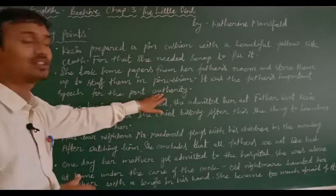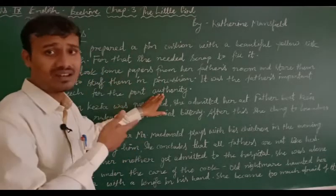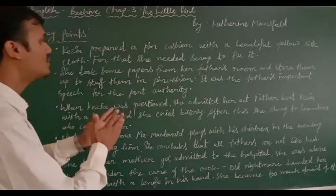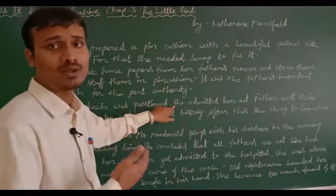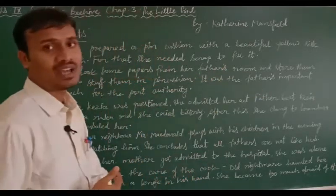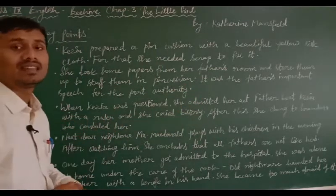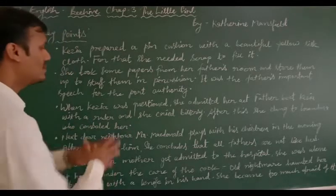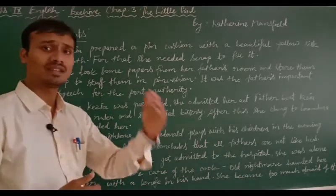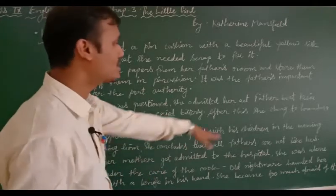Those papers were actually her father's important speech for the court authority. When Kezia's father could not find his speech papers, Kezia was called and questioned, and she admitted what she had done — she had collected those papers to prepare the pincushion. She was a small little girl who did not know. She was beaten by her father with a ruler and she cried bitterly. She then clung to her grandmother who consoled her. Meanwhile, the next-door neighbor Mr. Macdonald was playing with his children in the evening, and watching this, Kezia concluded that all fathers are not the same.